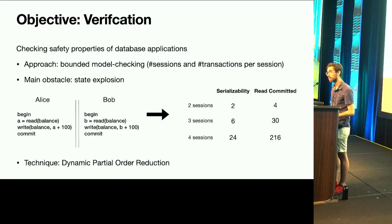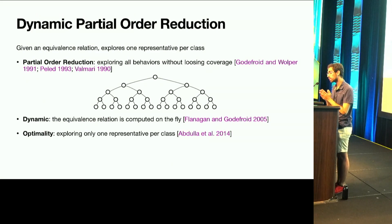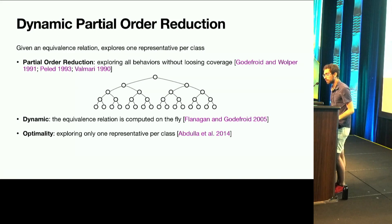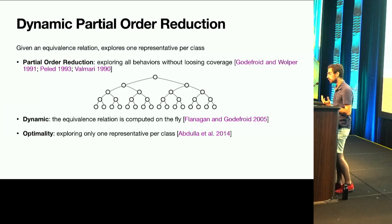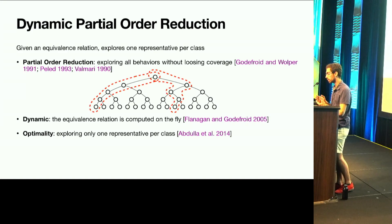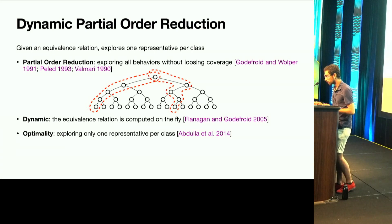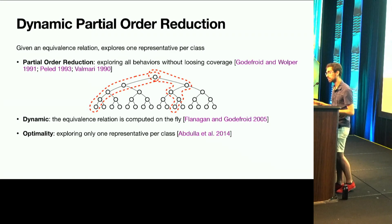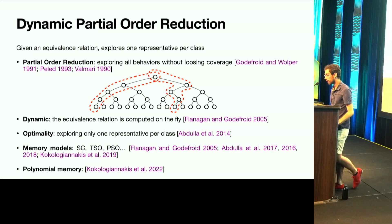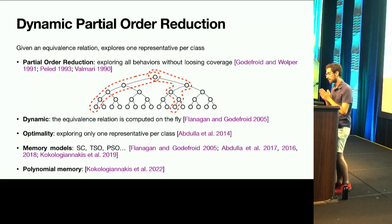To address this, we apply a technique called Dynamic Partial Order Reduction, also called DPOR. Given an equivalence relation, DPOR tries to explore one representative per class. It is a well-known technique from the 90s — observing the tree of executions, sometimes we don't need to explore all possible executions because some executions are equivalent, and exploring just one representative is enough to answer whether the program is safe. Fifteen years later, the first paper managed to compute this equivalence relation on the fly, and another nine years to get the first optimal algorithm — exploring only one representative per class. This technique has been applied for analyzing memory models such as SC, TSO, and PSO, but only last year we got the first algorithm that uses only polynomial memory.